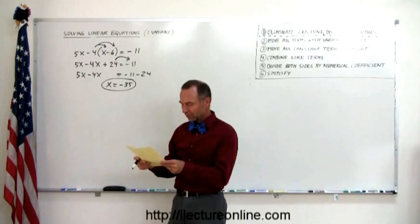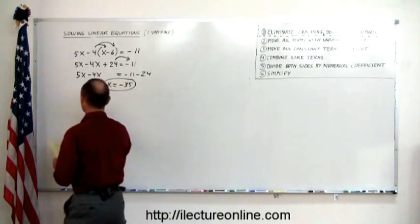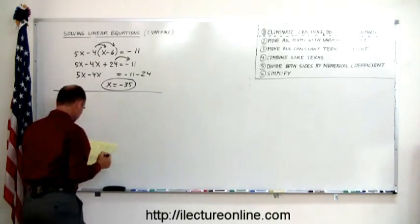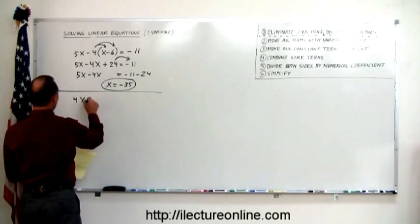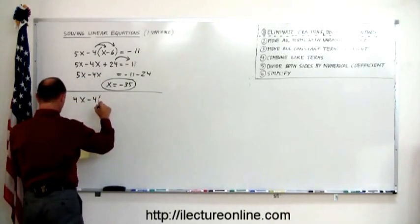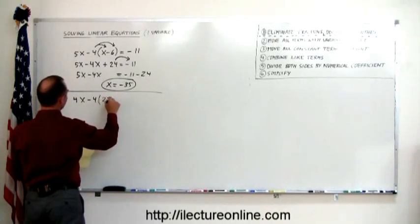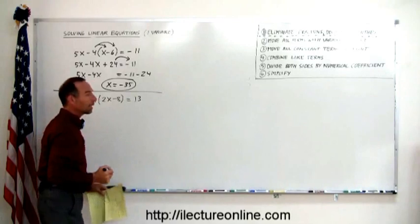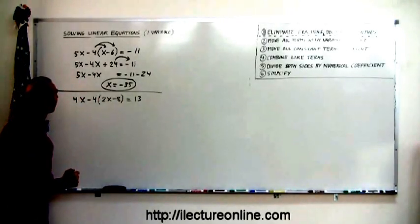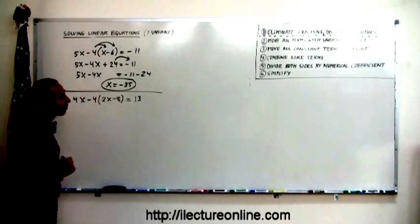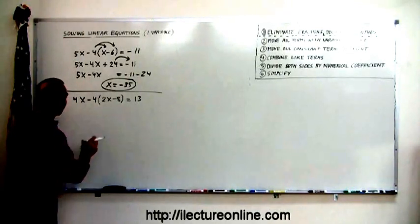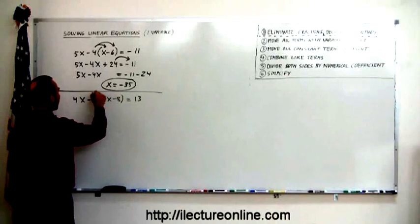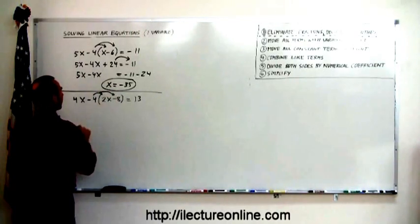Okay, let's try this with another problem. How about this one? 4x minus 4 times 2x minus 8 equals 13. We have parentheses. Step number one is necessary. Let's get rid of these parentheses by distributing the negative 4 over these two right there.